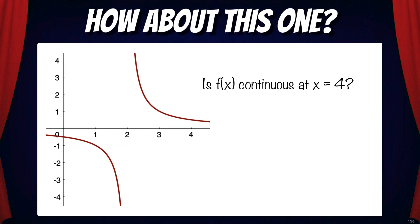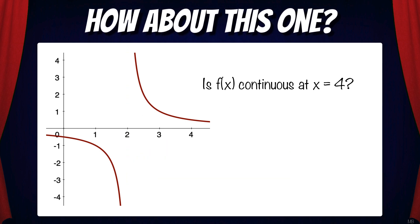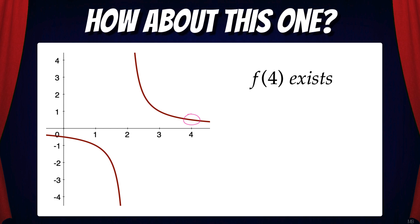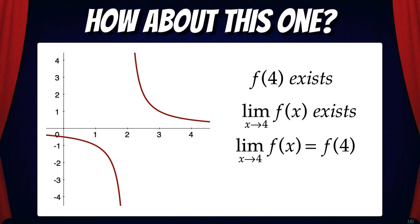How about this example: is the function continuous at x equals 4? Don't be fooled — this function is discontinuous at x equals 2 because there's a vertical asymptote, but we don't care about x equals 2, we care about x equals 4. Applying the conditions: does f(4) exist? Yes. Does the limit of f(x) as x goes to 4 exist? Yes — it approaches the same height from both sides. Condition 3: does the limit equal f(4)? Yes. Therefore, this function is continuous at x equals 4.